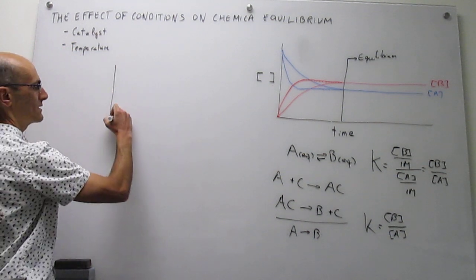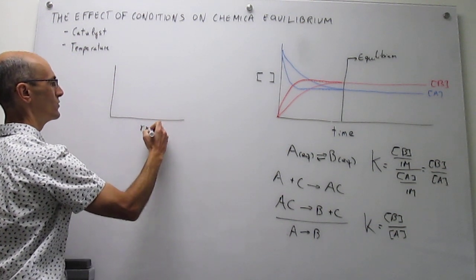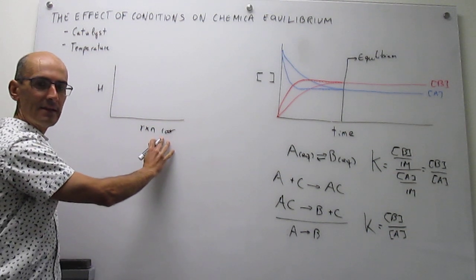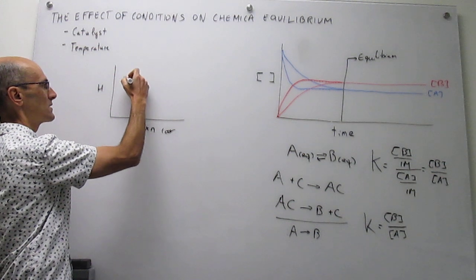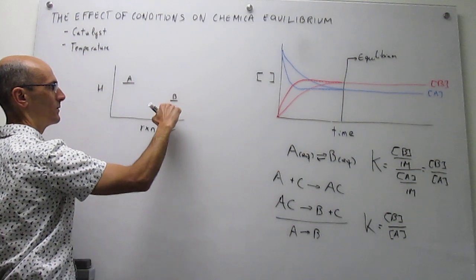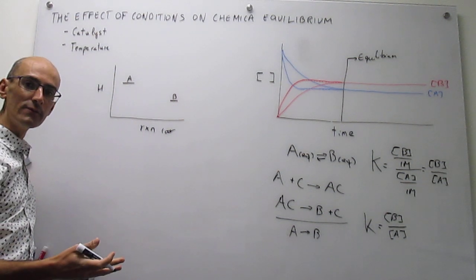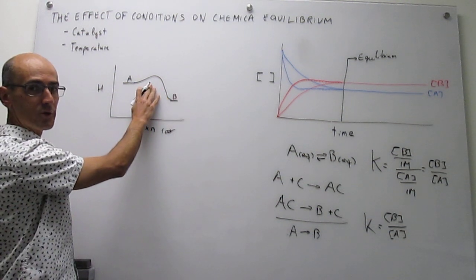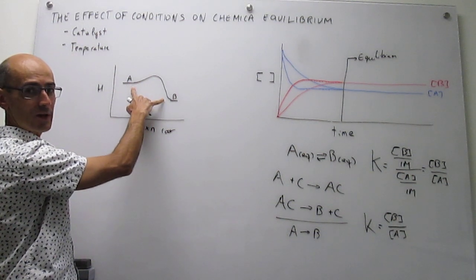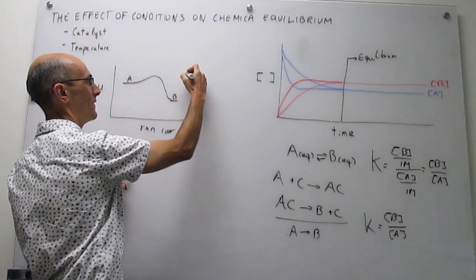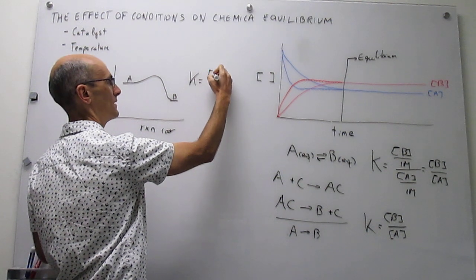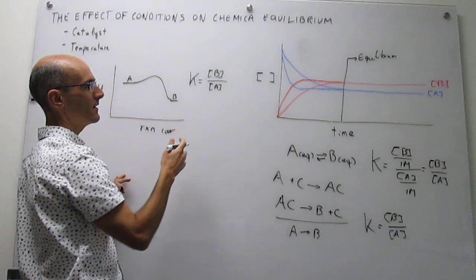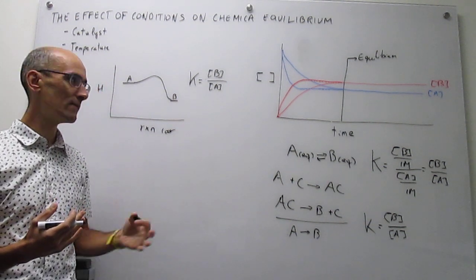Let's draw first an exothermic reaction. This is a diagram where you track the enthalpy as a function of the reaction coordinate. The reaction coordinate simply indicates progress from reagents to products. If the reaction is exothermic, here you will have A and here you will have B. B has lower enthalpy than A, which means that delta H for the reaction will be negative. The equilibrium constant for this process is still the concentration of B divided by the standard concentration, over the concentration of A divided by the standard concentration. The question is whether this value is affected at all by temperature.